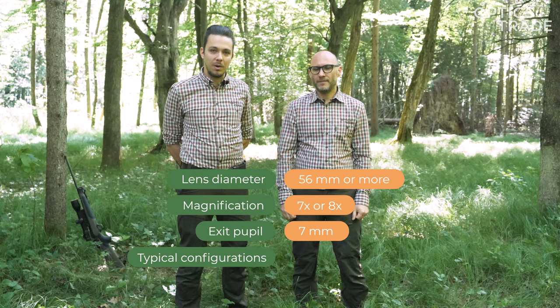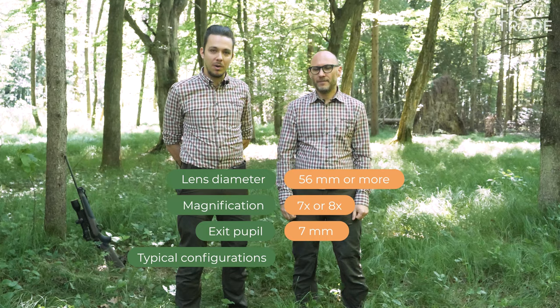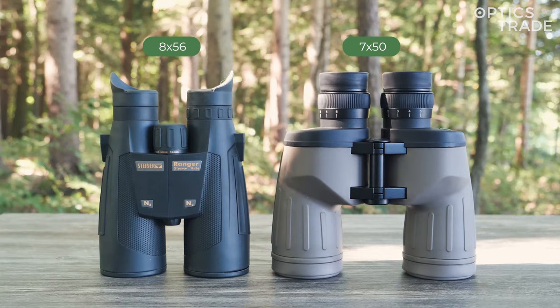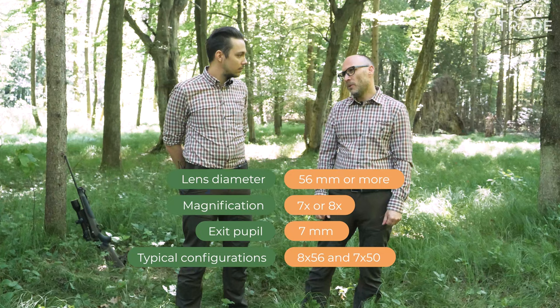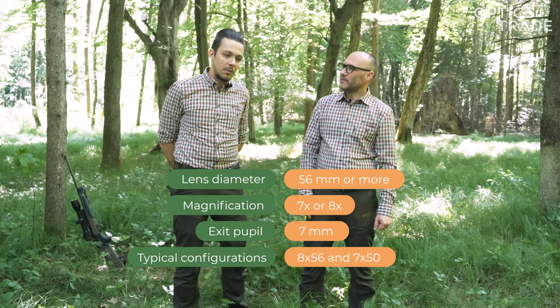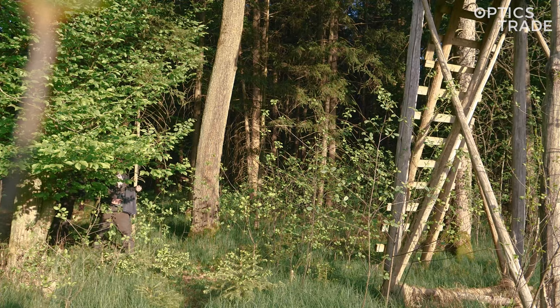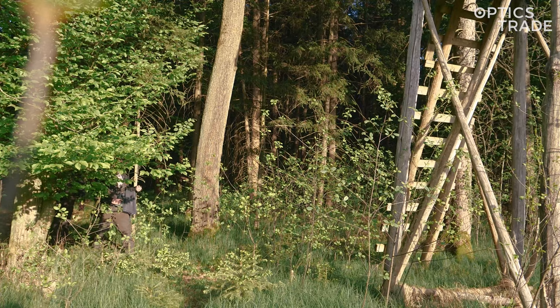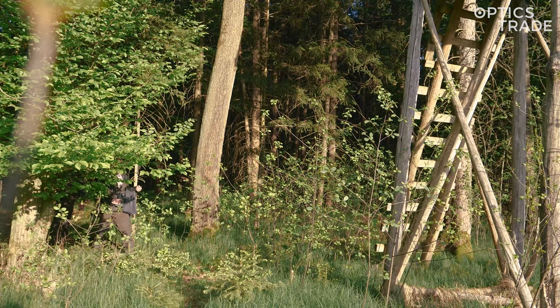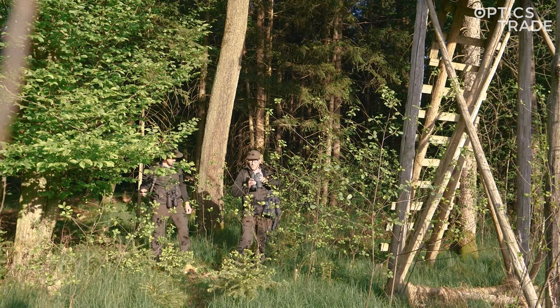What about typical configurations? The most typical configuration is the 8x56 binoculars — a wide field of view and good low-light performance. And the 7x50. What about 10x56? We do not list those as low-light suitable. Also, we can name the 7x42, which is also not primarily suitable for low-light hunting, but we can still use it.